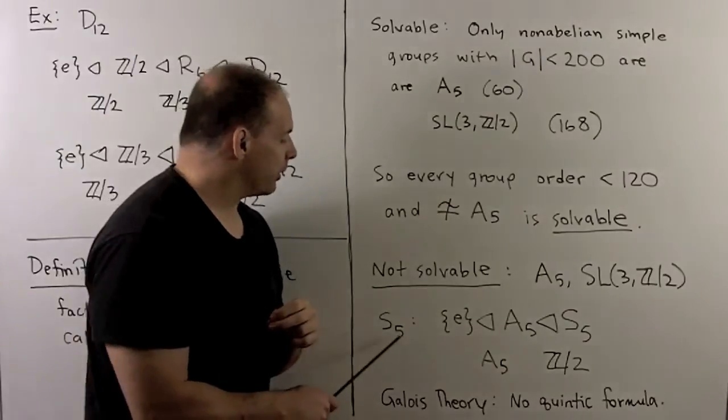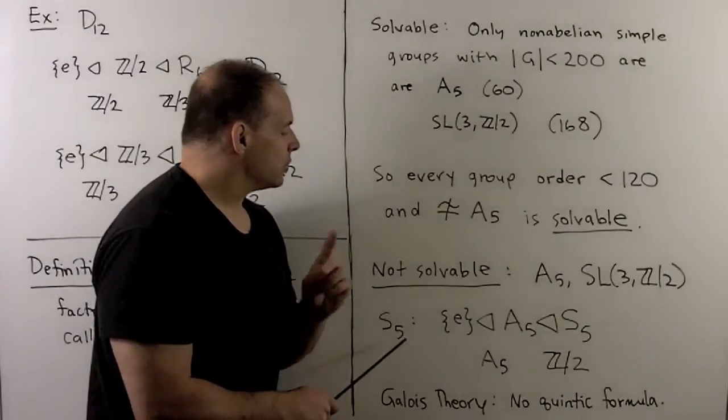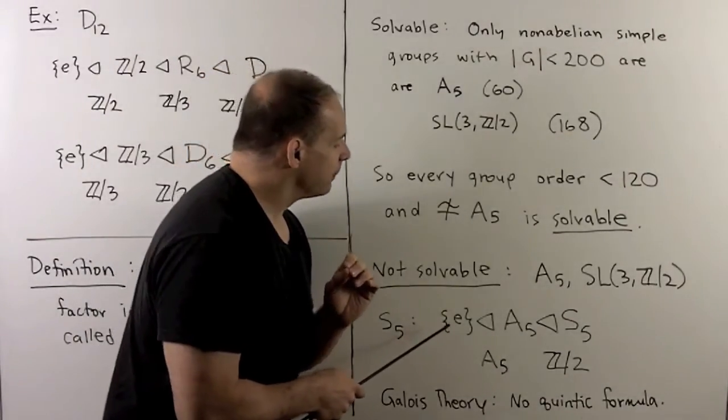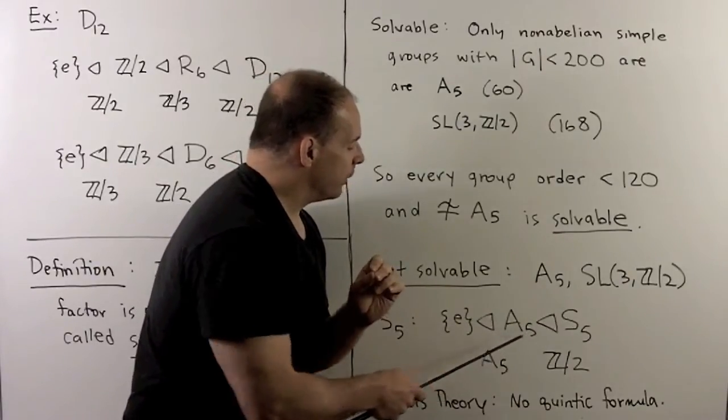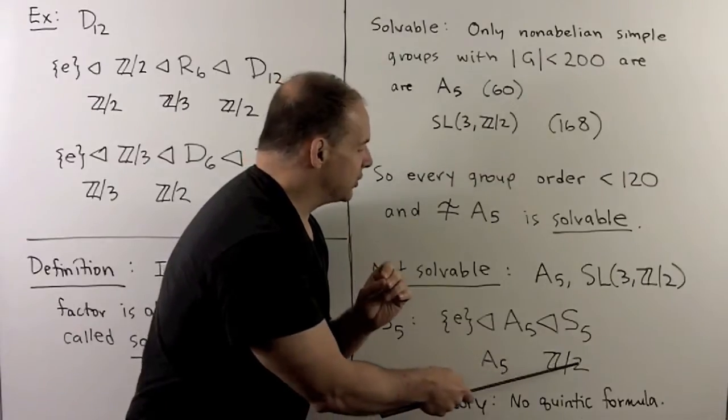So for something that's not solvable, we can consider each of these. But more important, consider S5, symmetric group on five letters. So the composition series that I have here can have the identity, normal in A5, normal in S5, with factors A5 and Z mod 2.